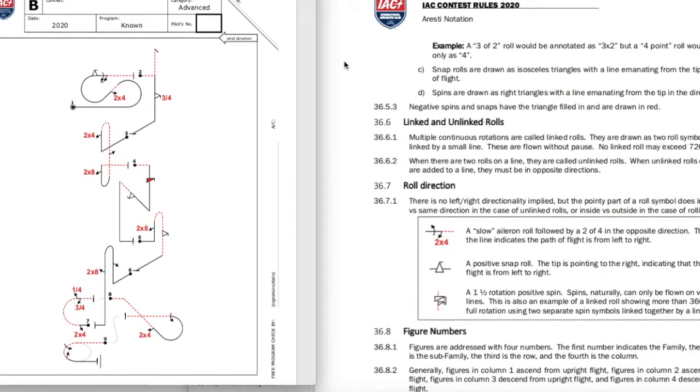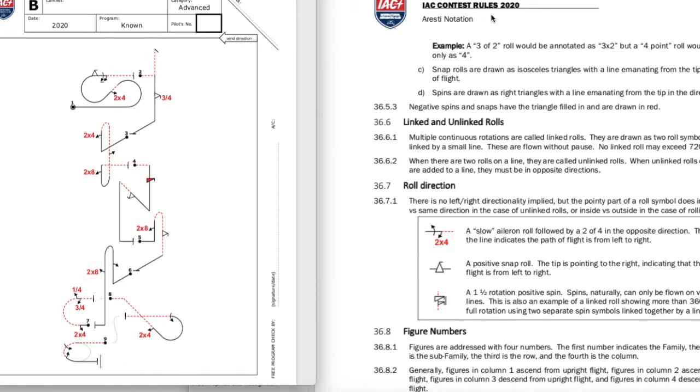Continuing on our discussion on chapter 36 about roles, linked and unlinked roles. If you have multiple continuous rotations, you're going to see like on figure one here, that you have the one and a half roll. And those are annotated by this little tick mark that connects it. So what this tells us is that this one and a half roll is going to all be in the same direction. You'll never see this more than 720 degrees in total.